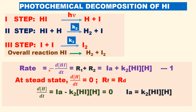Let us study the kinetics of this photochemical decomposition of HI. The rate of decomposition of HI — written as minus because HI is consumed — occurs in two steps: in the first step it is decomposed, and in the second step it is decomposed. Therefore, the rate of decomposition of HI equals the rate of the first step plus the rate of the second step. The rate of the first step is equal to Ia, directly proportional to the intensity of light.